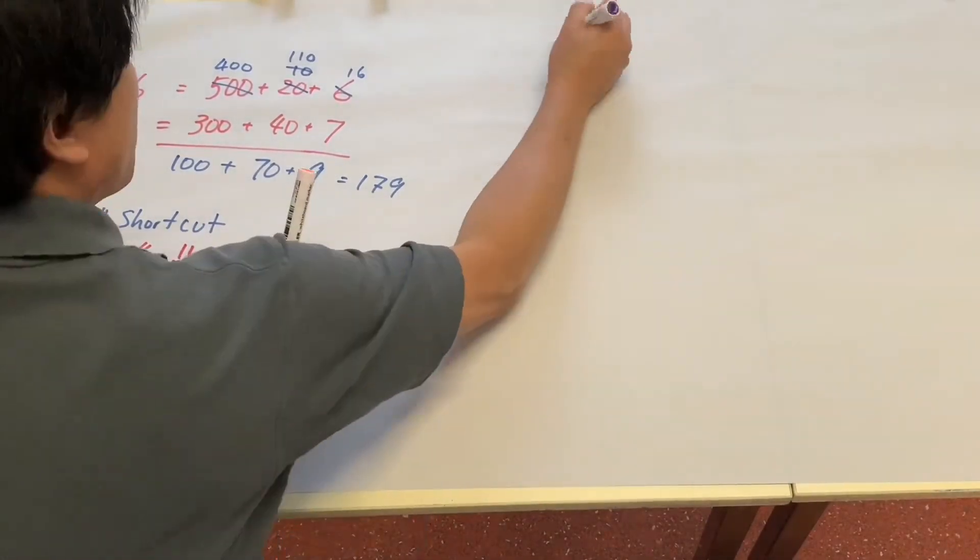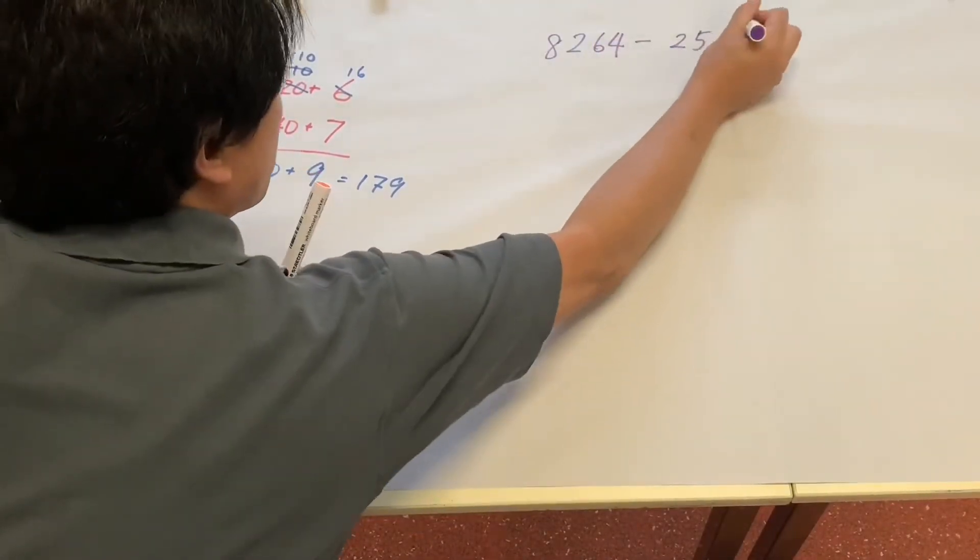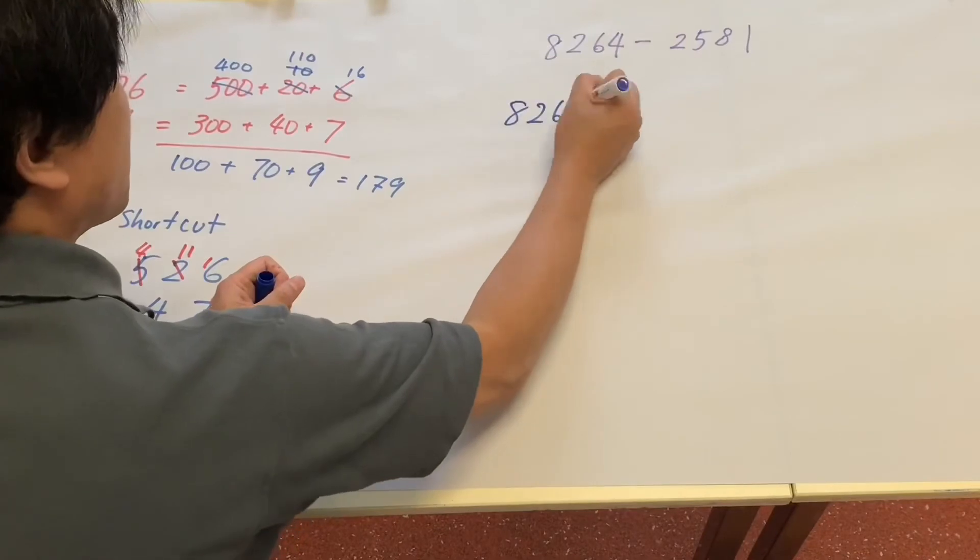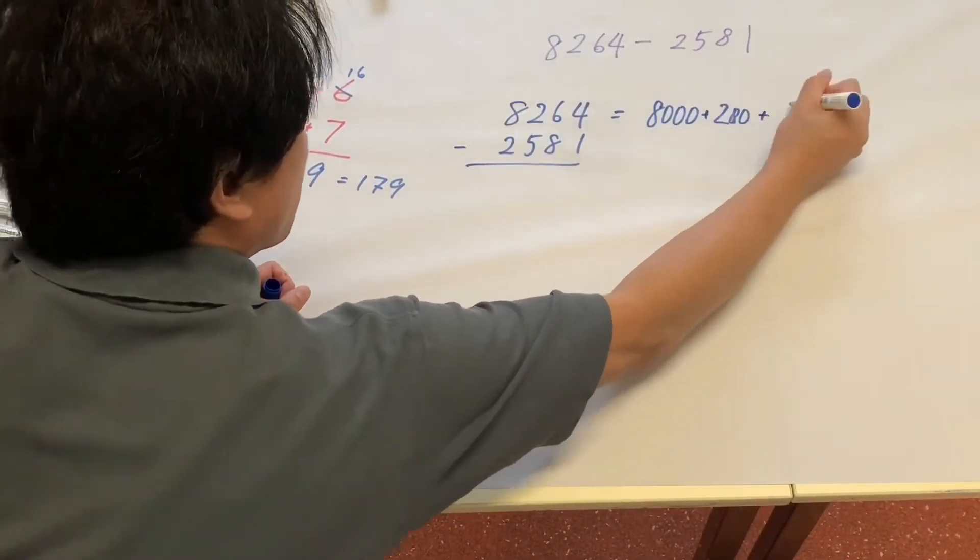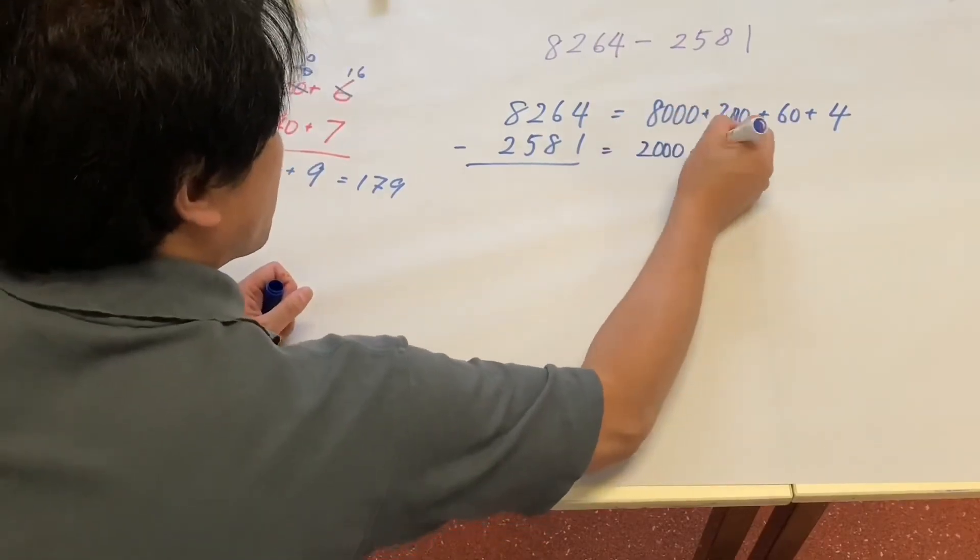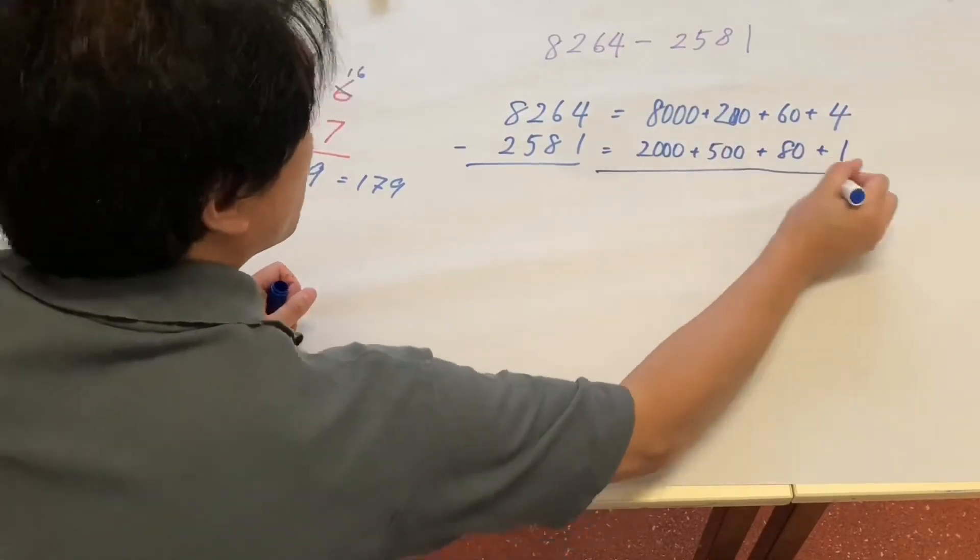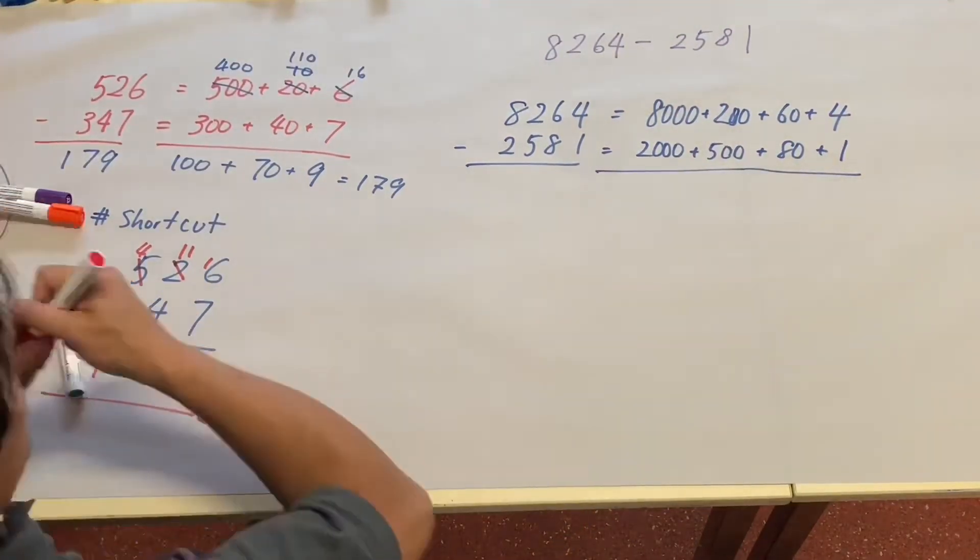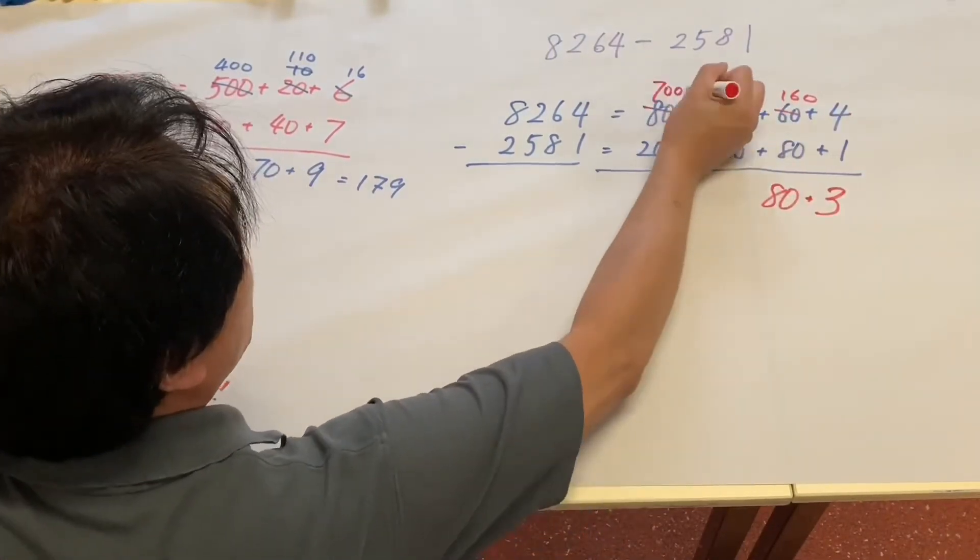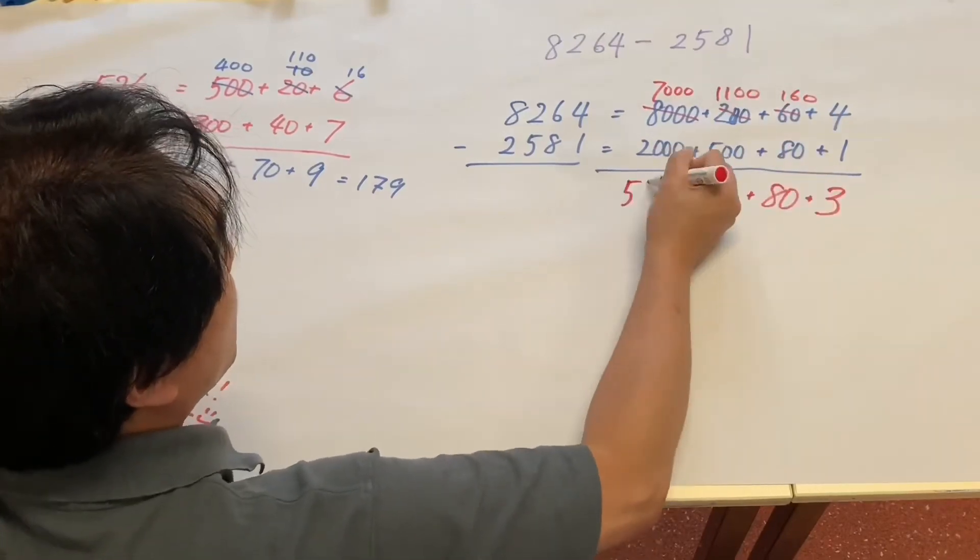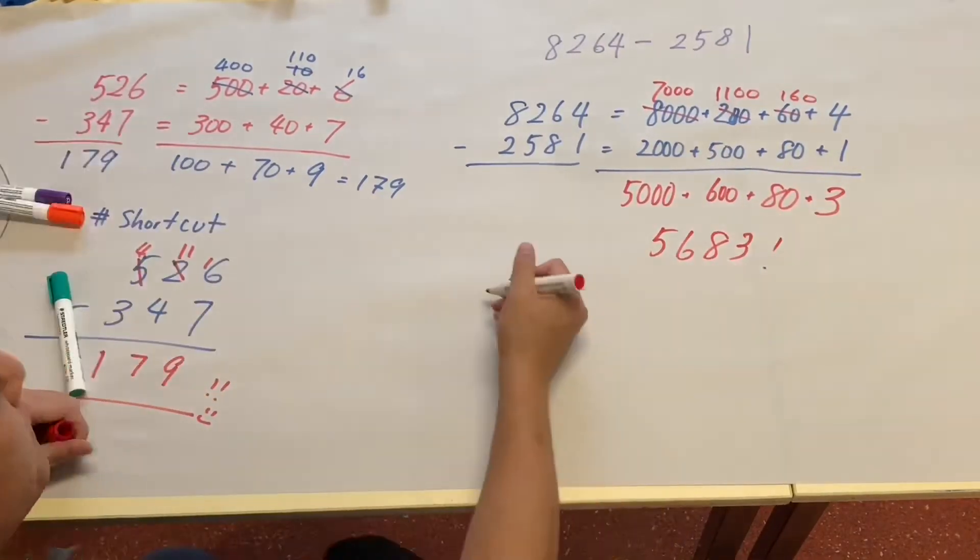Now some advanced students or those students who have deep understanding, they can easily work on four digits take away four digits. Again, the shortcut.